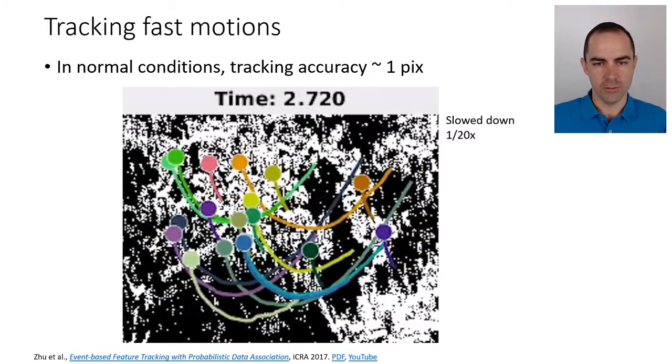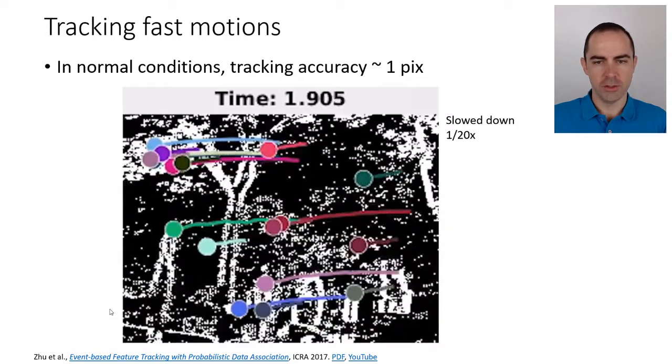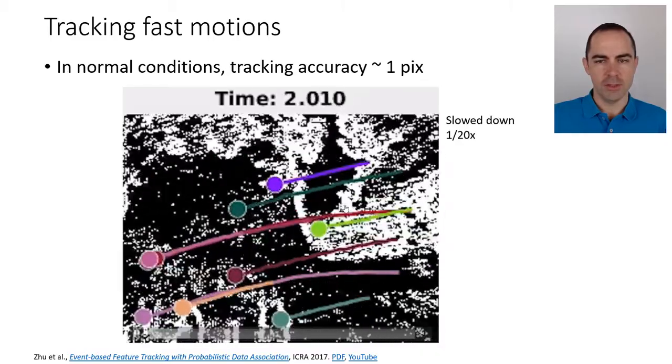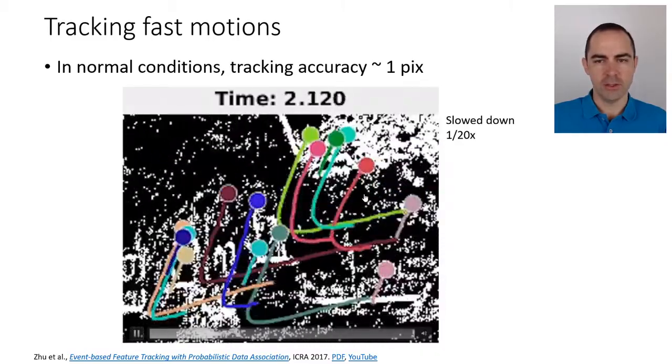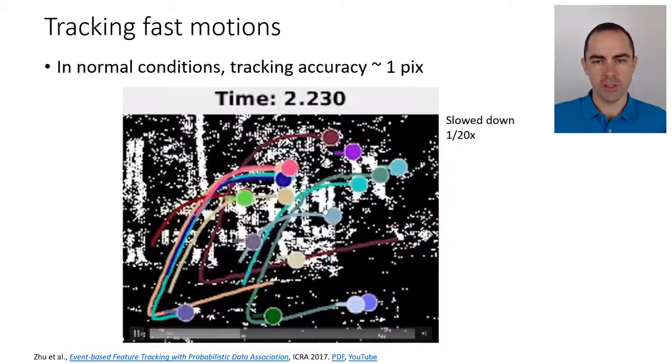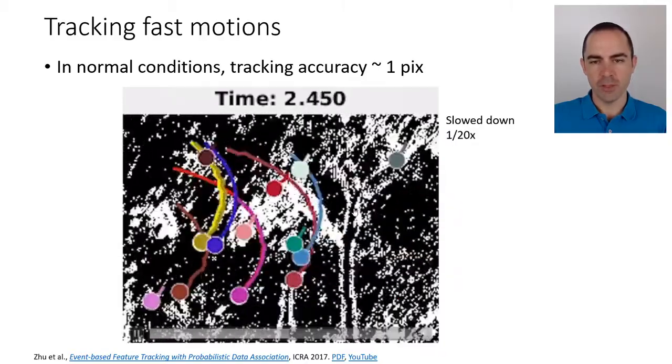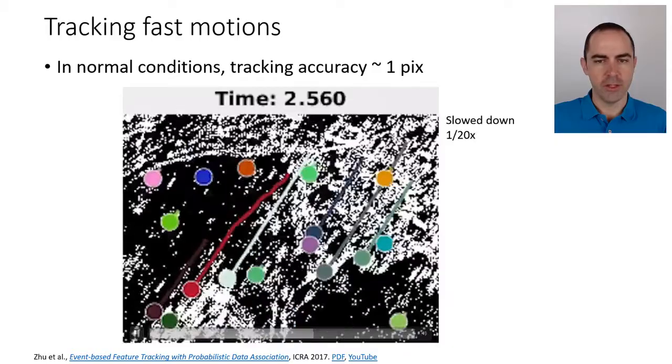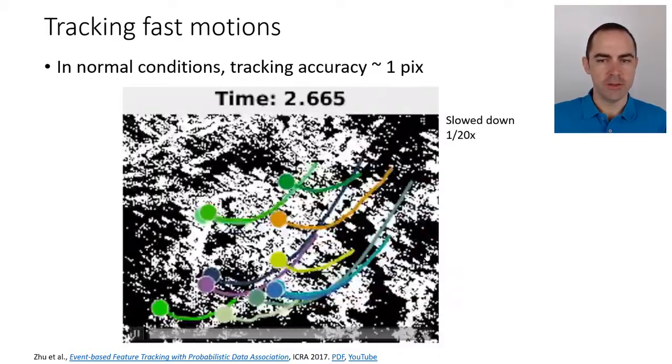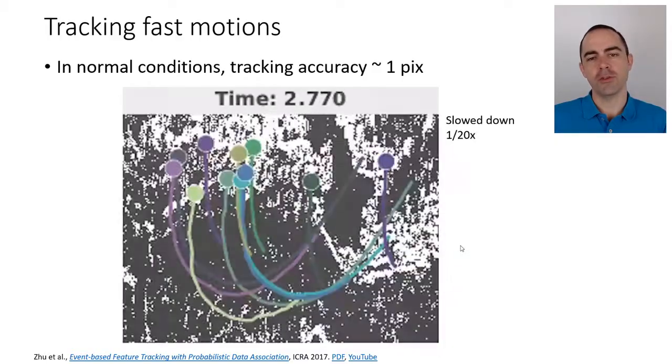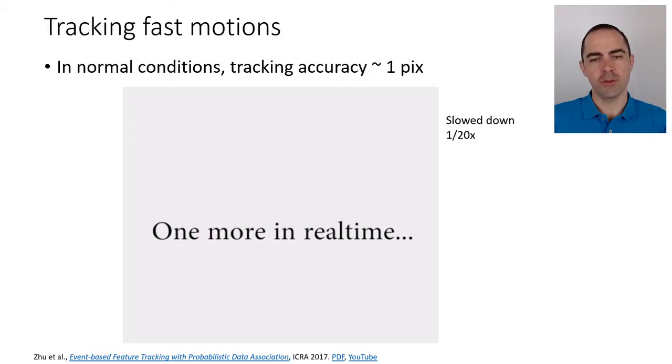It was very fast. As you can see, these are just the raw events. There is no motion compensation in the display of the events because the edges have some thickness. These are the features. We use a different color for every feature so that we can distinguish them easily.